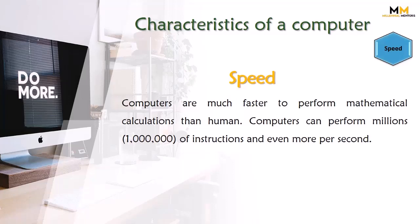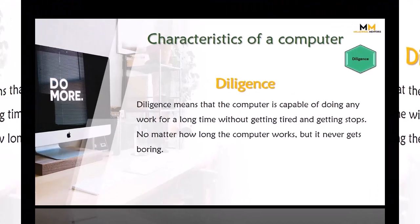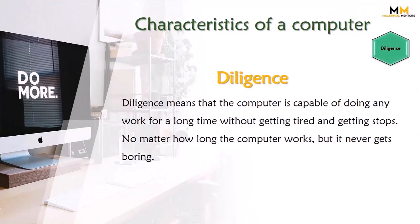Another quality of a computer is its high speed. Computers are much faster at performing mathematical calculations than humans. Computers can perform millions of instructions, and even more, per second. The computer is so fast that it can do work in the blink of an eye. Due to its high speed, it can perform more calculations in a short span of time and complete its tasks quickly.